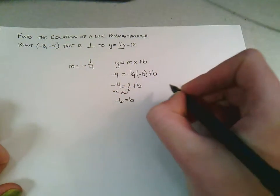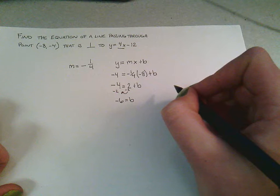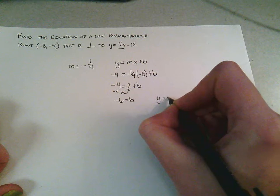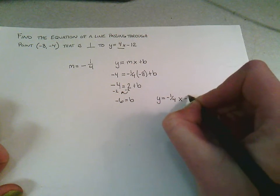Therefore, our new equation for a line that is perpendicular to y = 4x - 12 and passes through the point (-8, -4) will be y = -1/4x - 6.